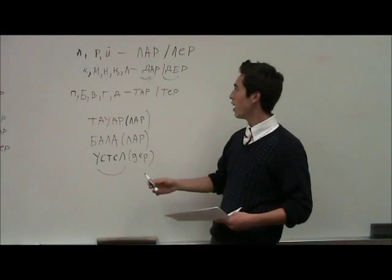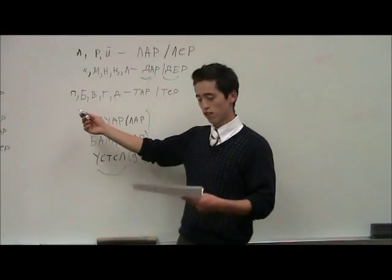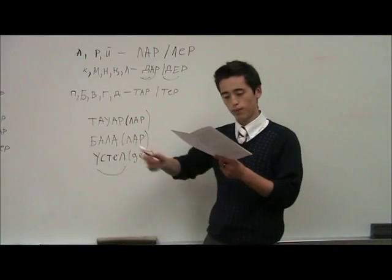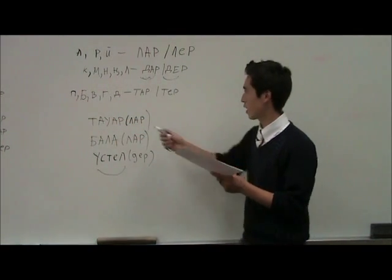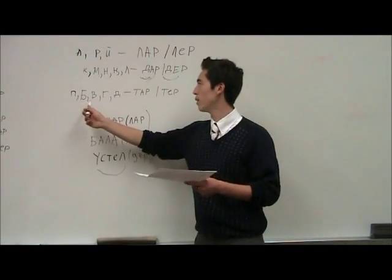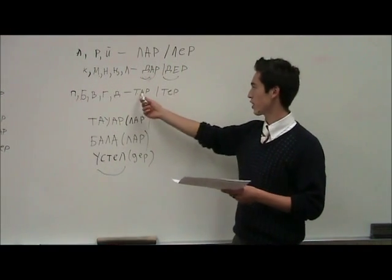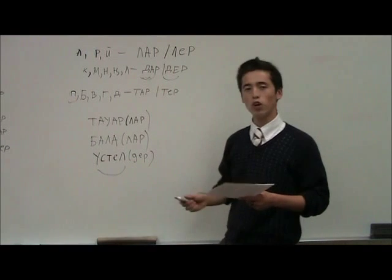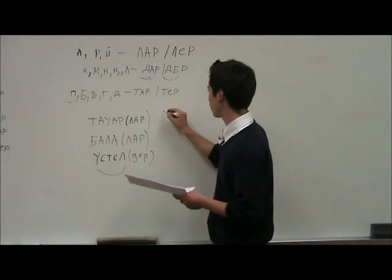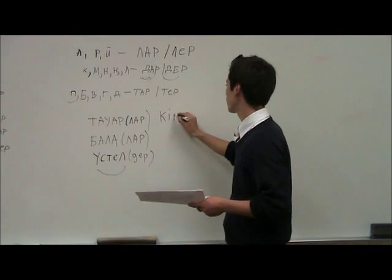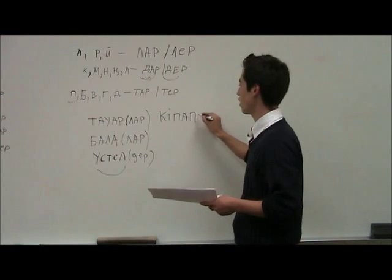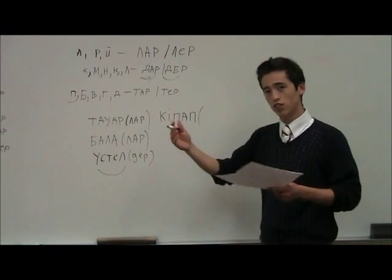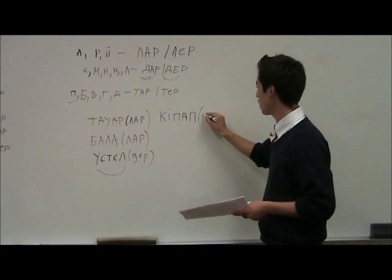And if it ends with unvoiced consonants like p, b, g, or t, we add tar or tir. So for the letter p, the word is 'ktap'. Ktap in Kazakh is a book. If we say ktap — books — it will be 'ktaptabi'.